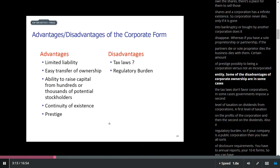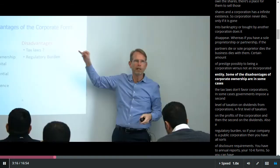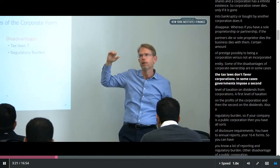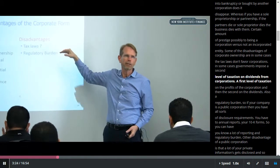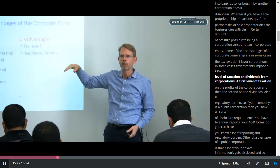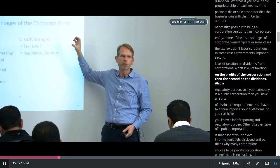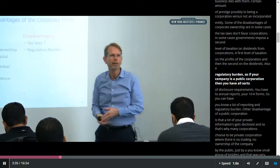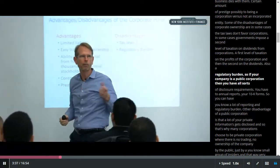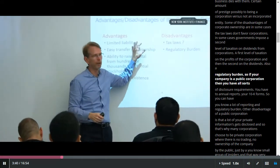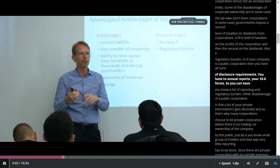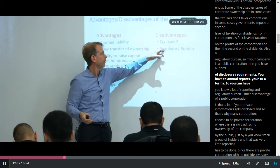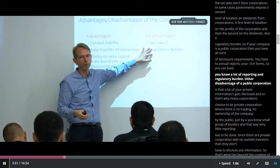Some of the disadvantages of corporate ownership are that, in some cases, the tax laws don't favor corporations. In some cases, governments impose a second level of taxation on dividends from corporations — a first level of taxation on the profits of the corporation, and a second on the dividends. Also, there's a regulatory burden. If your company is a public corporation, you have all sorts of disclosure requirements and have to report your 10-K forms, so you can have a lot of reporting and regulatory burden.